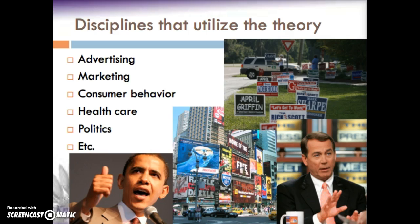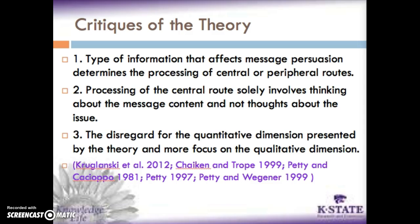Some researchers have been criticized for misinterpreting the theory. One instance is researchers thinking that the type of information that affects message persuasion determines the processing route — central or peripheral. They assumed message variables are only influential when the central route is used, and source variables are only influential when the peripheral route is used. In fact, the theory does not make statements about types of information being related to routes; rather, the key to the theory is how any type of information will be used depending on which route — central or peripheral — is taken.